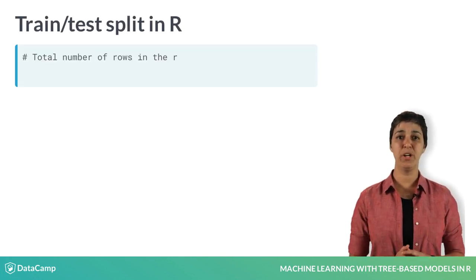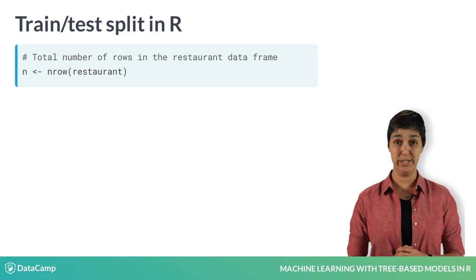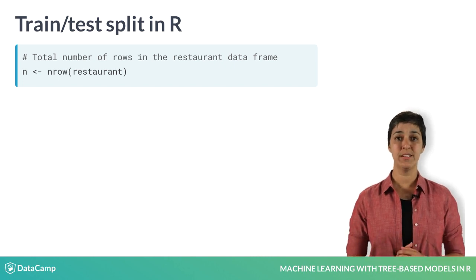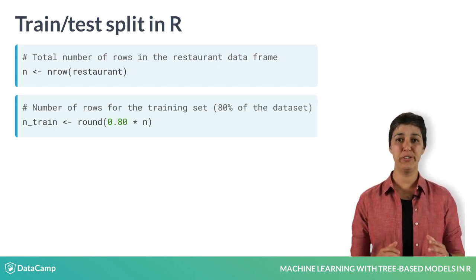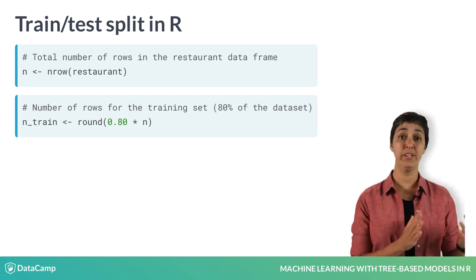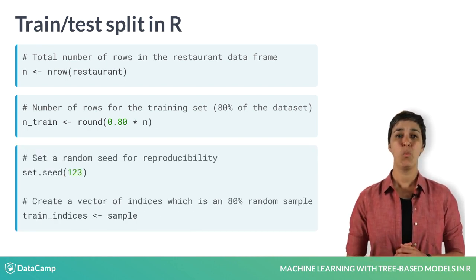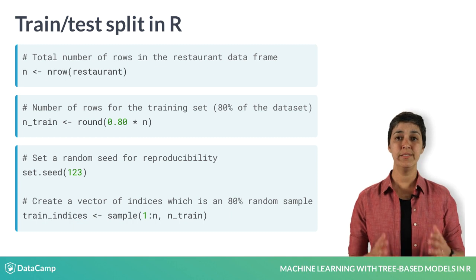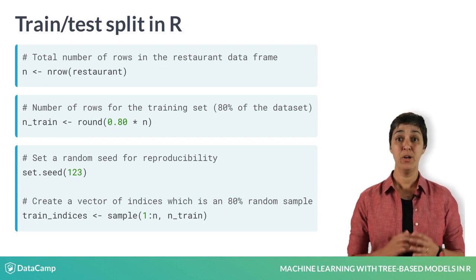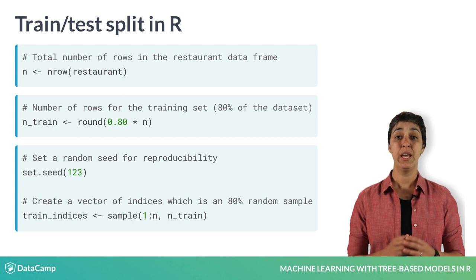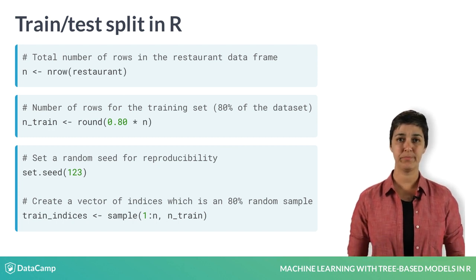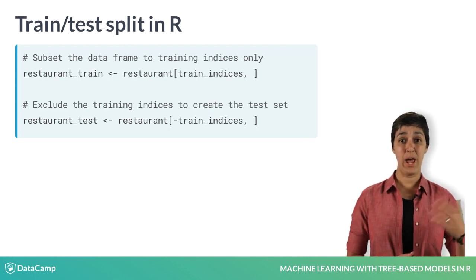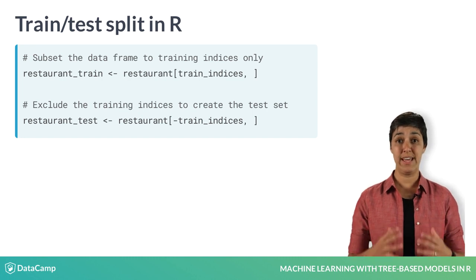The first thing you need to do is get the number of rows in the whole dataset. You can do this by using the nrow function. Next, we'll define how many rows you'll be using for the training set — in this case, 80%. Then, we'll create a vector of indices which is an 80% random sample. Since we are using a random sample, to ensure we have reproducible results, it is important to set a seed. Finally, you subset the data to the training indices only, and you exclude the training indices to create the test set.